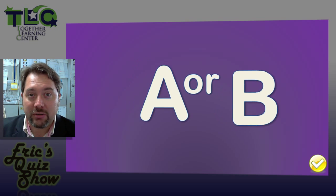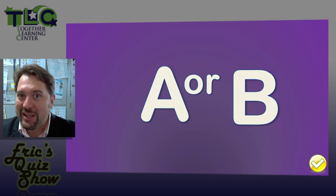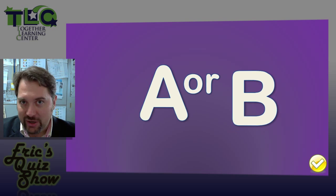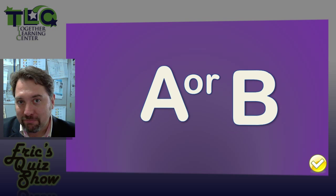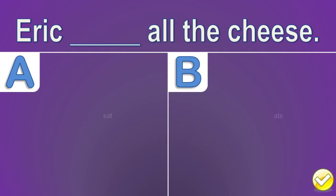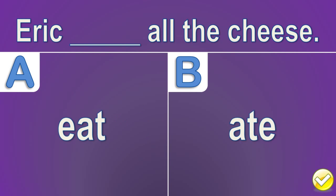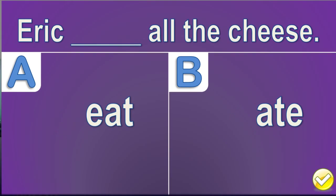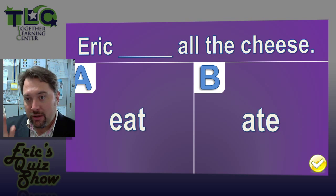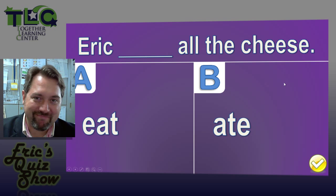If you don't want to gamble, you can wait to see the question and simply choose A or B and ring in or buzz in when you know the answer. Are you ready to look at an example? Let's take a look. Eric — all the cheese — which is it, A or B? As soon as you know the answer, you can buzz in.